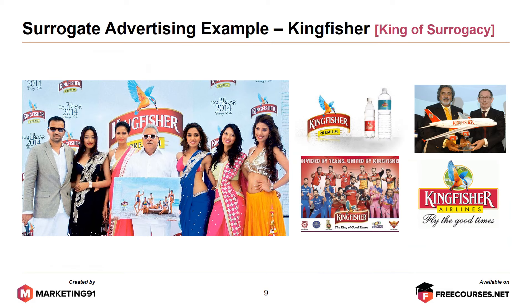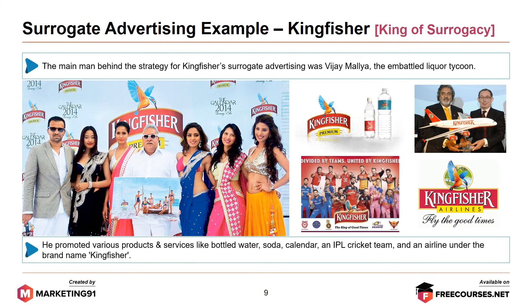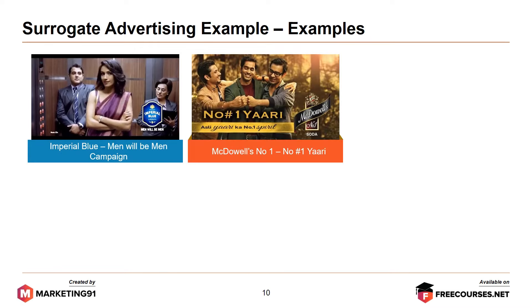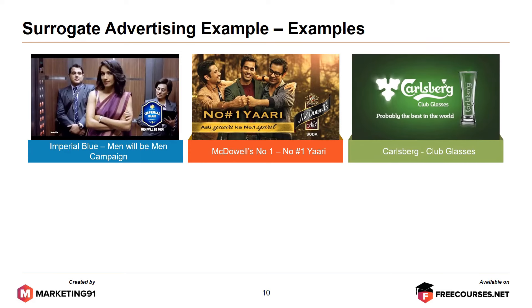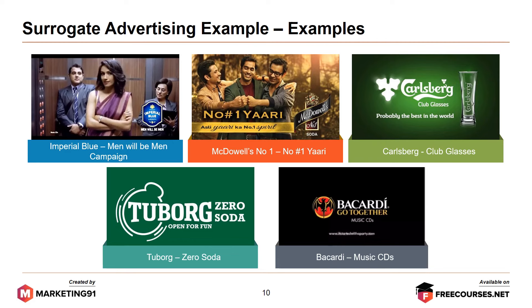Now let's look at some examples of surrogate advertising. In India, the king of surrogacy is Kingfisher. The man behind the strategy for Kingfisher's surrogate advertising was Vijay Mallya, the liquor tycoon. He promoted various products like bottled water, soda, a calendar, an IPL cricket team, and even an airline under the brand name Kingfisher. Other examples include Imperial Blue's Men Will Be Men campaign, McDowell's No. 1 Zyada, Carlsberg club glasses, Tuborg Zero Soda, and the very famous Bacardi music CDs.